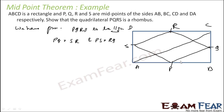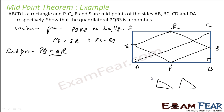So let's prove that PQ is equal to QR. If we take triangles APS and BPQ, we can see that angle A equals angle B equals 90 degrees, AP equals BP because P is the midpoint of AB, and AS equals BQ because AS is AD/2 and BQ is BC/2.